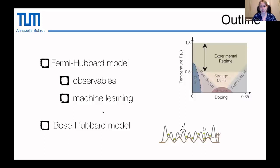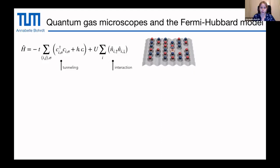This is a sketch of the phase diagram. If you tune the temperature and the doping — doping means how many holes there are — you see many different phases. The Fermi-Hubbard model consists of two comparably simple terms. You have spin-1/2 fermions — spin up or spin down — living on a 2D square lattice. Blue would be spin up, red would be spin down, and they can hop in this lattice. There is an interaction term that penalizes two fermions sitting on the same site with opposite spin, and a tunneling term.